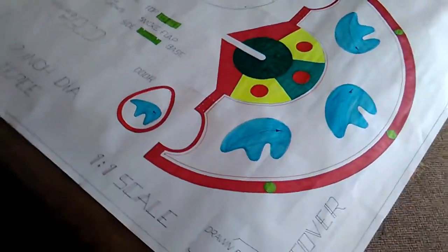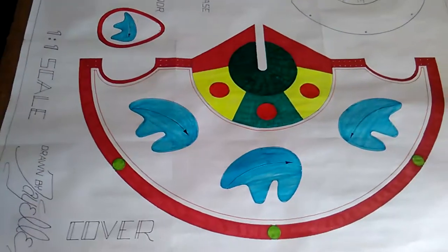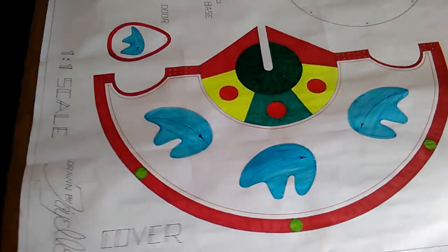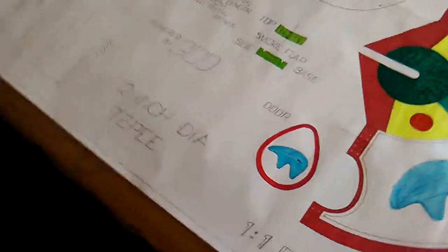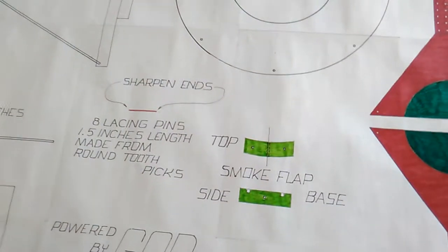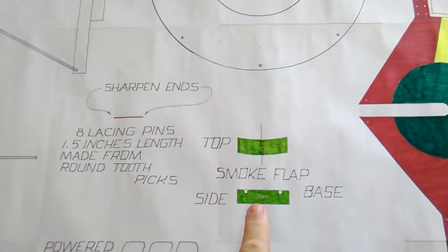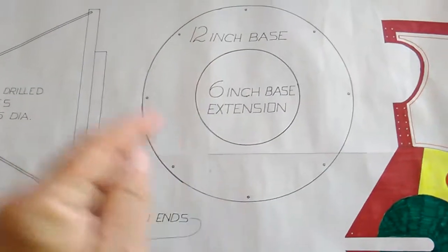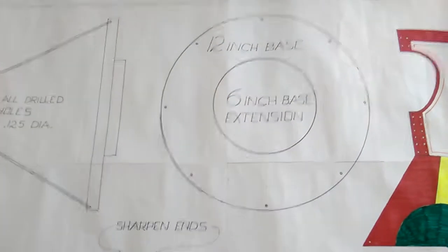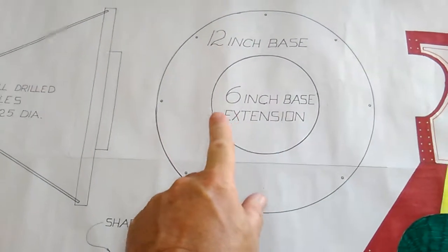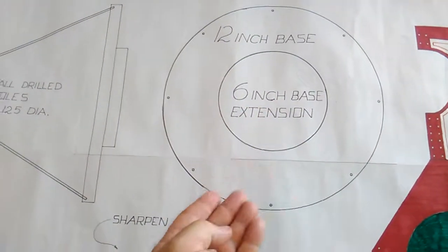So this is the teepee cover and the door here. This is an addition that I put onto the base to put the smoke flap poles. And then this is the base. So this is like the top looking at it from the top or the bottom.